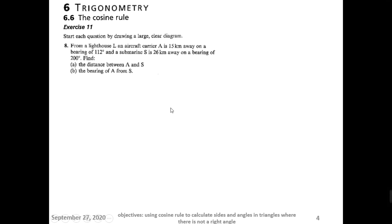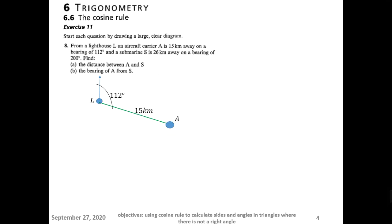From a lighthouse L — so this is L — an aircraft carrier A is 15 kilometers away on a bearing of 112 degrees. So from the lighthouse we draw the north sign, and clockwise we measure 112 degrees. The aircraft carrier is in that direction, and the distance from the lighthouse to A is 15 kilometers. So this is A, the aircraft.